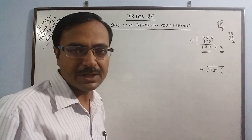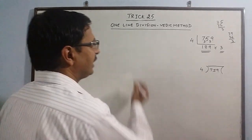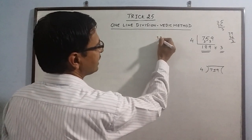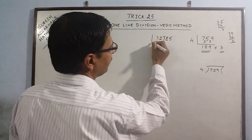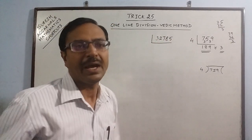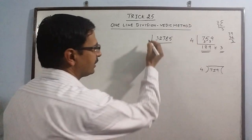I am taking one more example of a single digit divisor. So we have 32785 and we have to divide this by another single digit. Say I will take a bigger digit now: 9.